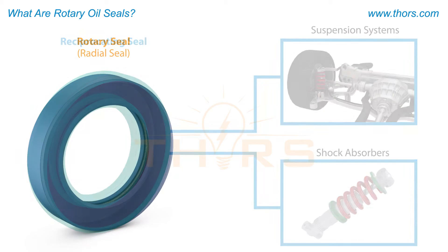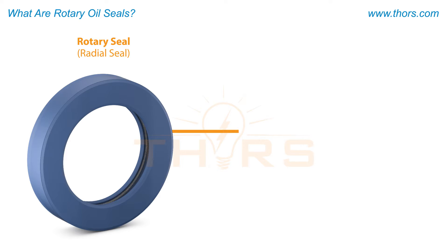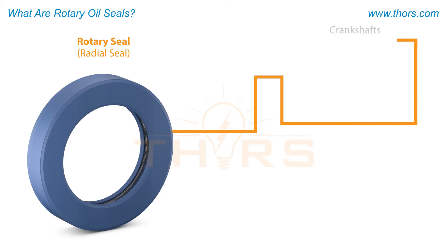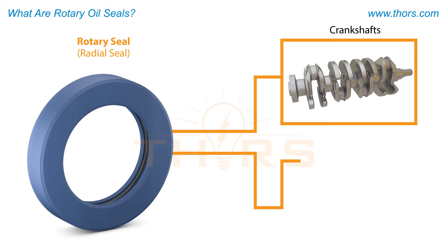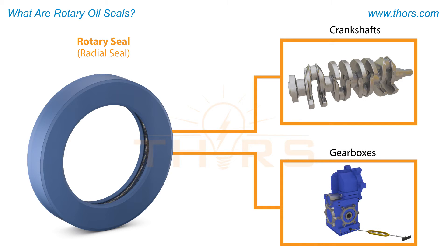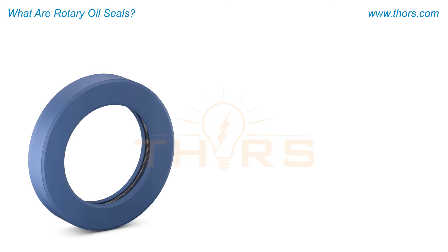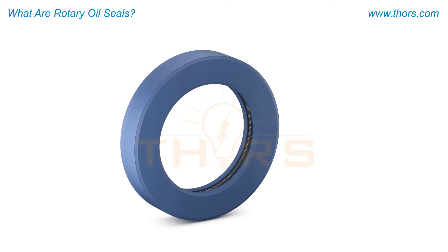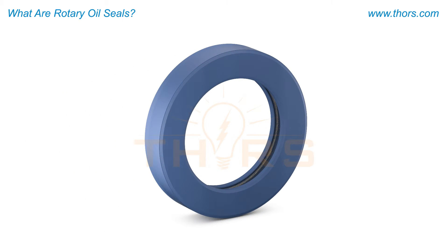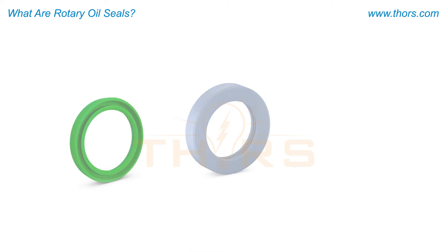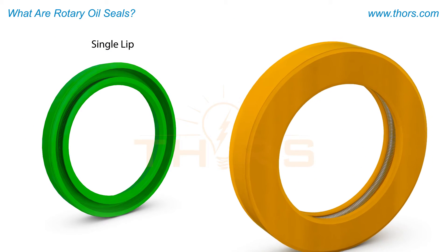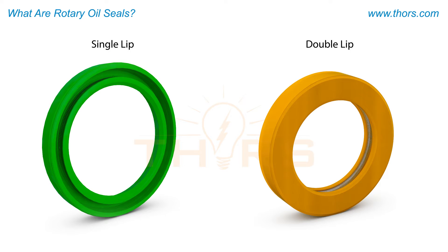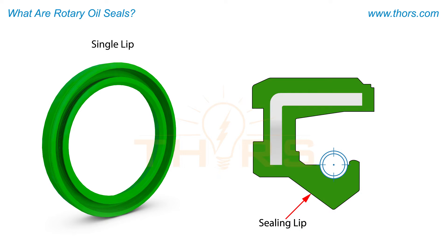Rotary seals are typically used in applications in which shafts are rotating, such as crankshafts and gearboxes. This course will focus on oil seals used in rotary applications, which are typically manufactured as single lip or double lip depending on the requirement.